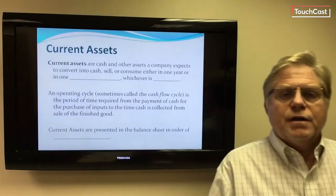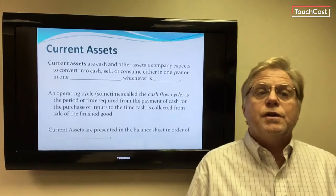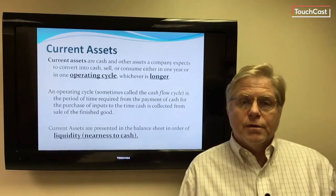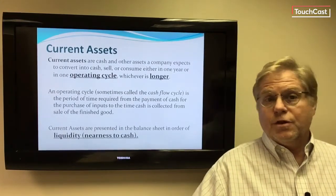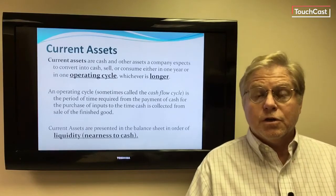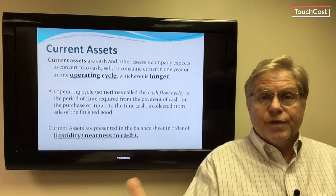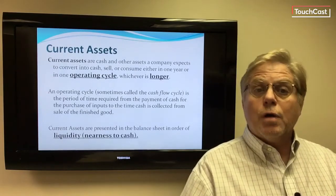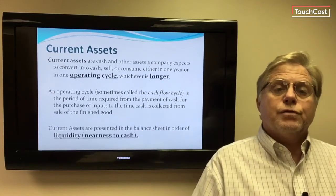Current assets are cash and other assets a company expects to convert into cash, sell, or consume, either in one year or in one operating cycle, whichever is longer. Most companies' operating cycles are well short of a year — maybe 30 or 60 days. However, some operations like long-term construction projects or shipbuilding can span two or more fiscal years, so current assets would be defined differently for those types of projects.